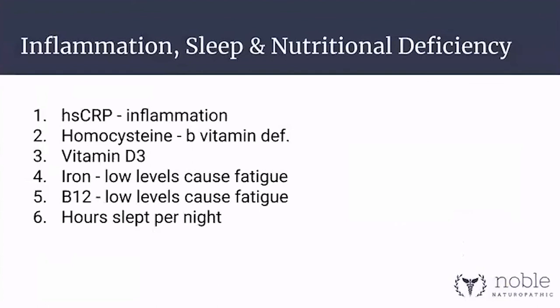A holistic approach would not be complete if we did not look at inflammation and weight loss, B vitamin deficiencies, vitamin D deficiency, hours slept per night, and iron deficiency. If someone is too tired and too inflamed, they won't eat well, they won't exercise — they will likely overeat because their body is sensing the need for energy. So look at sleep, nutrient deficiency, and inflammation.